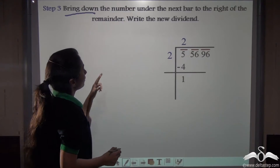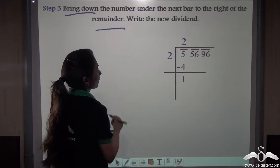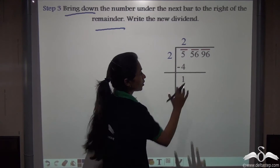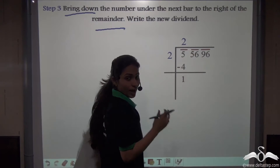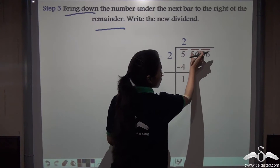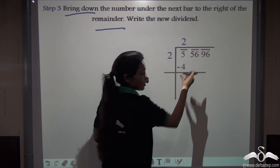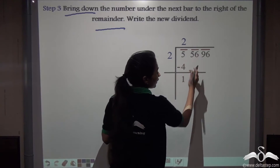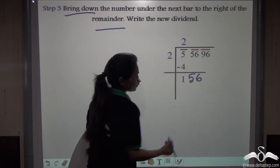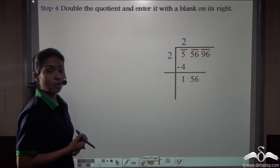Now bring down the number under the next bar to the right of the remainder to write the new dividend. In normal division you bring down one digit, but here we have placed a bar so that we always bring down a pair of digits together. So we bring down 56, making our new dividend 156.